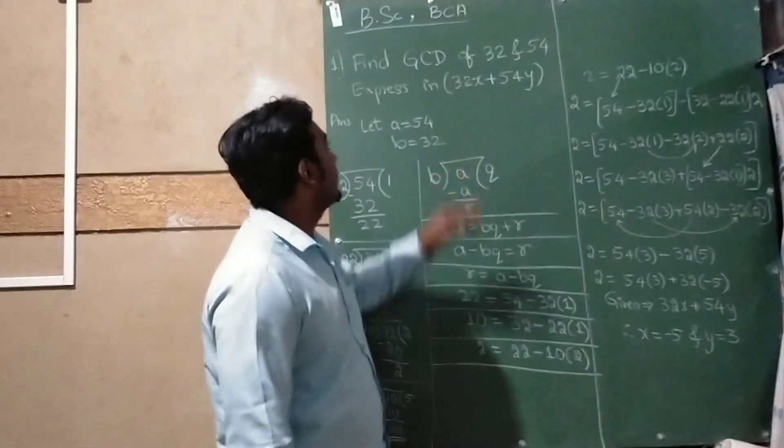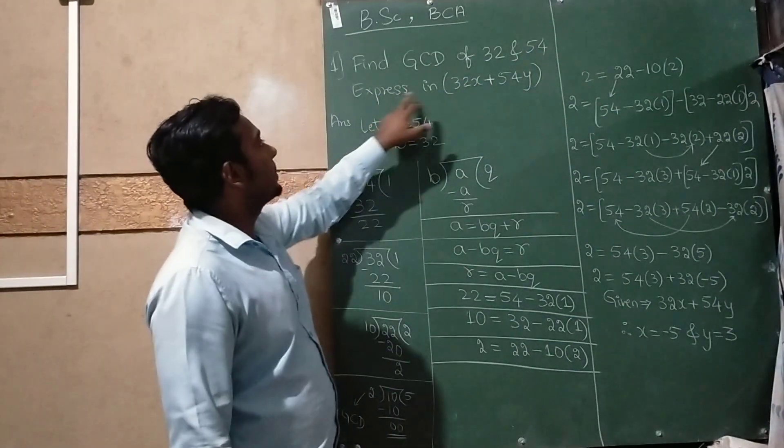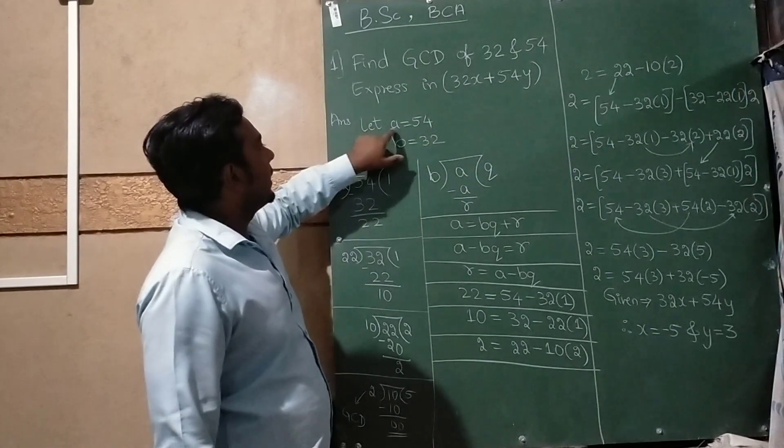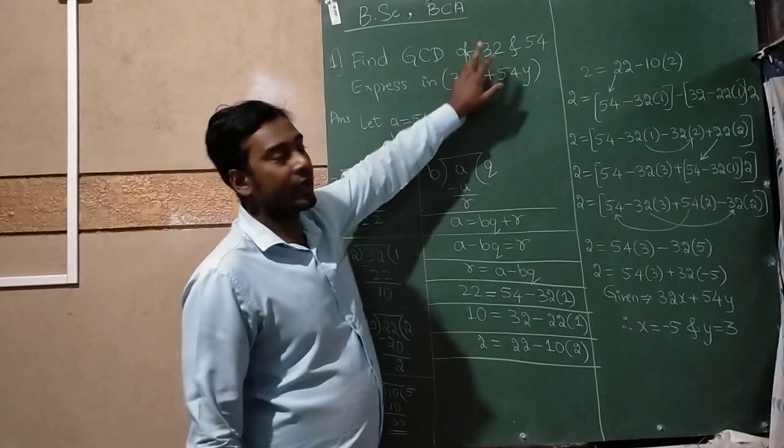Hello students, today I am going to teach you to find the GCD of 32 and 54, expressed as 32x plus 54y. I'm taking a equals 54, that is the bigger number, and b equals 32, the smaller number.